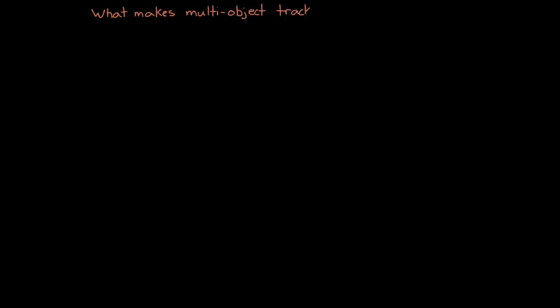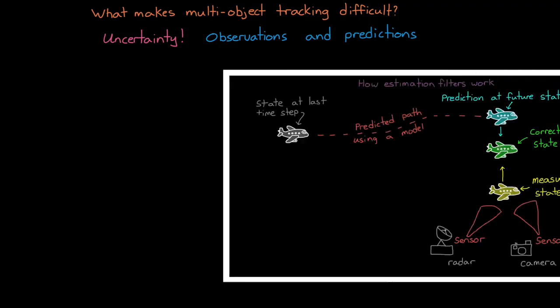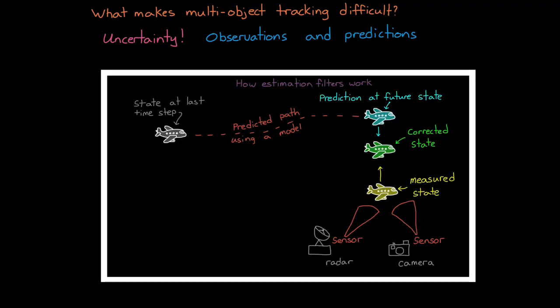To begin, let's talk about what makes multi-object tracking difficult, and then we'll circle back around and talk about how we can approach solving these issues. All of the problems we're going to have stem from our uncertainty. This is uncertainty in the observations, or detections of the objects, and uncertainty in our predictions of the paths that the objects are taking.